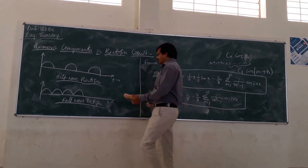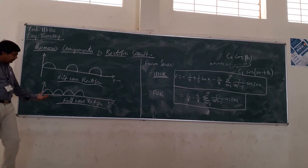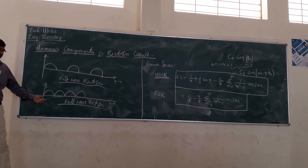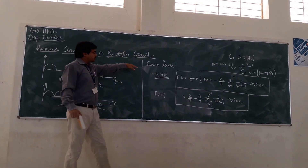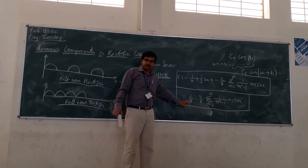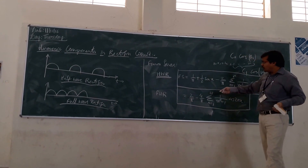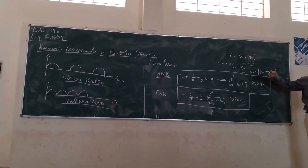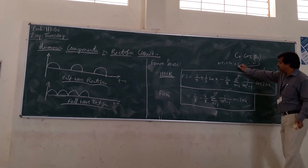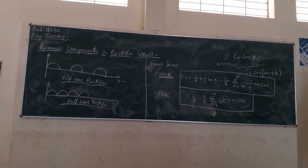Similarly, this is the waveform for your full-wave rectifier. If you are seeing the full-wave rectifier, this is also periodic in nature, so we can decompose it using the Fourier series. This is the equation for your full-wave rectifier. In case of your full-wave rectifier, same thing: you are having the DC component, the fundamental component, and the harmonics. For harmonics, we can substitute N equal to two, three, and so on.